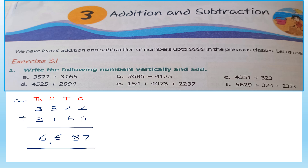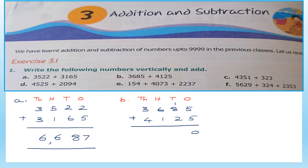Can you see how simple it is? Let's go to question B. Again let's write ones, tens, hundreds, and thousands. The number is 3,685 plus 4,125. Let's add: 5 plus 5 is 10, carry 1. 8 plus 2 plus 1 is 11, carry 1. 6 plus 1 plus 1 is 8. And 3 plus 4 is 7. So the answer is 7,810.